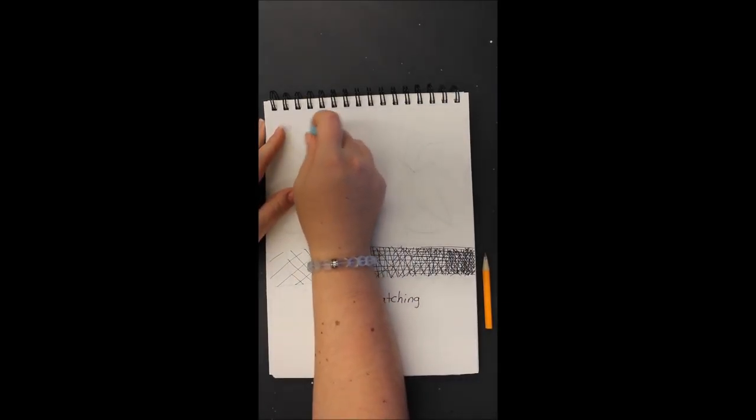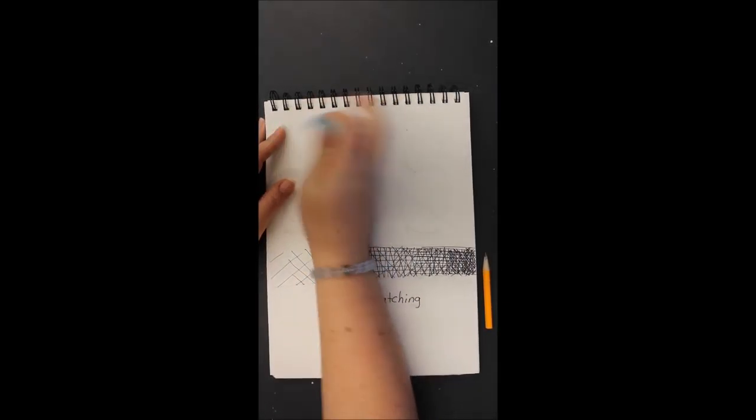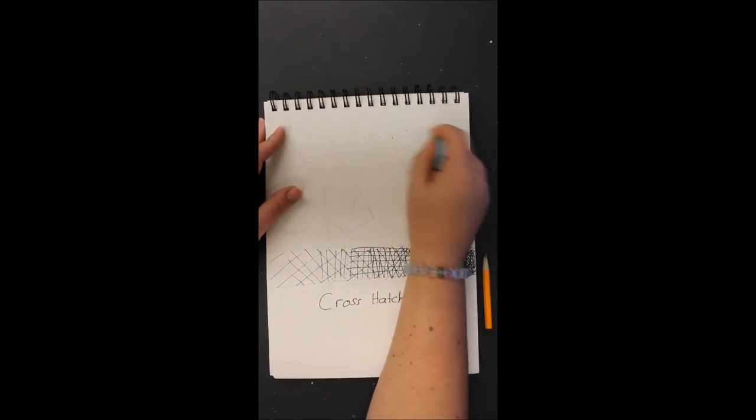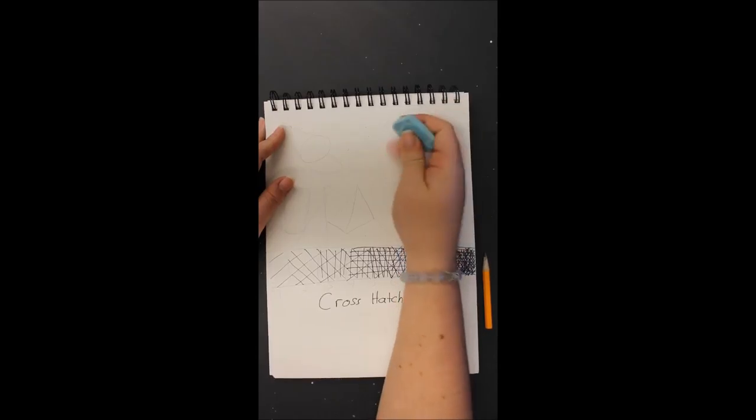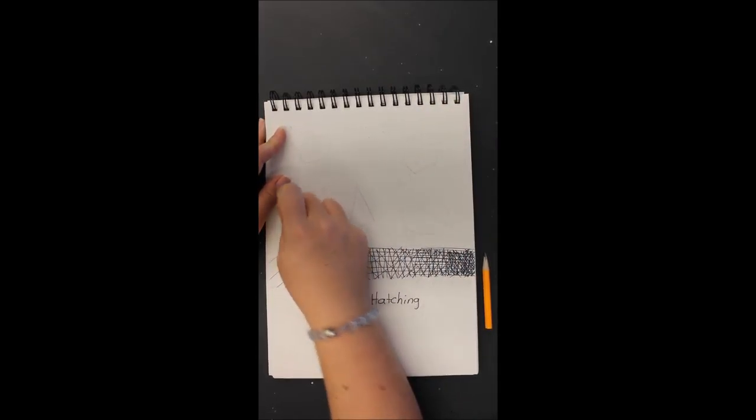Using my eraser to clean up the lines within my shapes, because right now they're shapes. Once we shade them and give that illusion of 3D, then they will be the illusion of form.